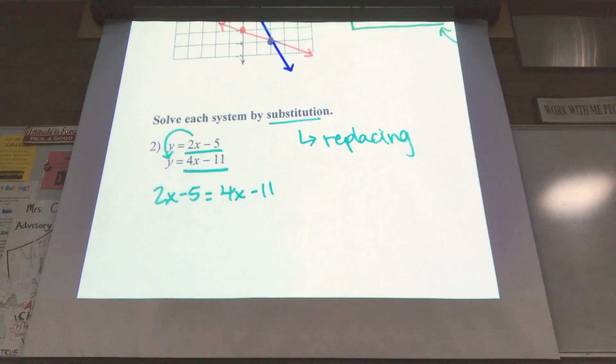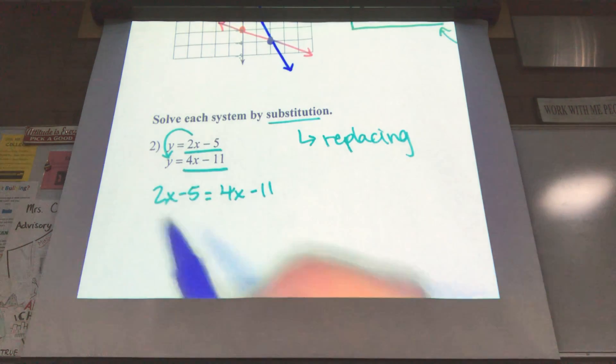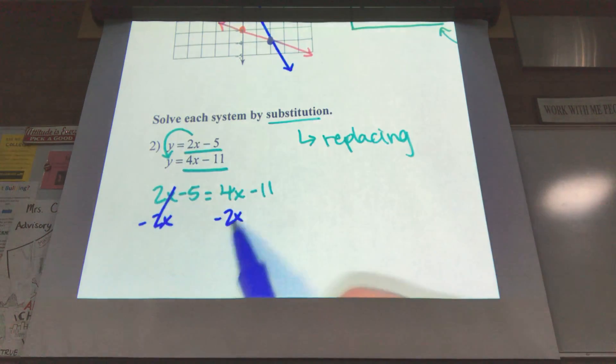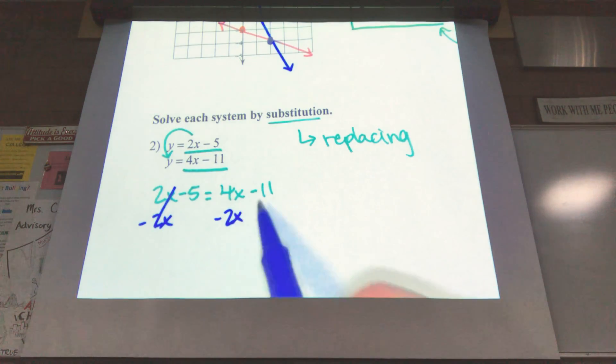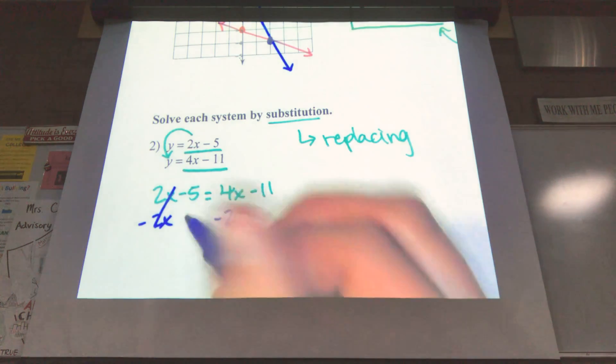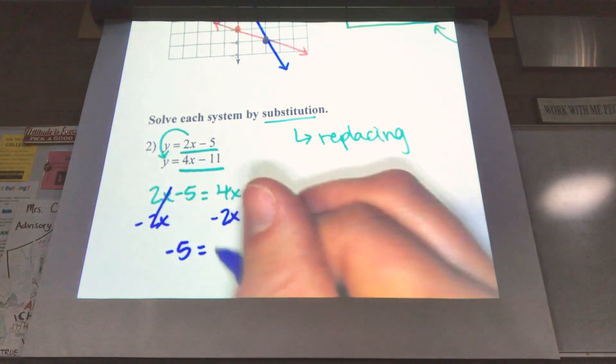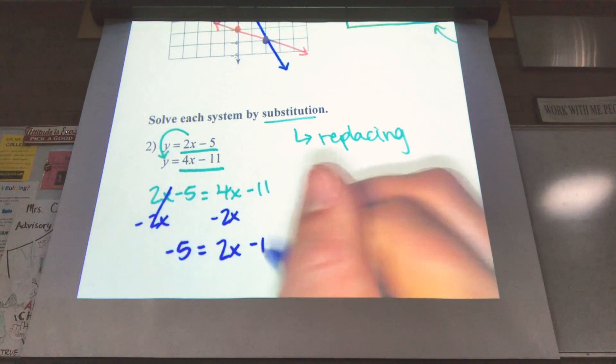So in order to solve, I need all of my x's to be on one side. I have 2x's right here, 4x's on the other side. I like to move the smaller one. The smaller one out of 2 and 4 is 2. So I'm going to do the opposite of a positive 2x, which is subtract 2x from both sides. The only one I can combine it with is the x. Negative 11 and 2x are not like terms. So now I have negative 5 equals 4 minus 2, 2x minus 11 left over.